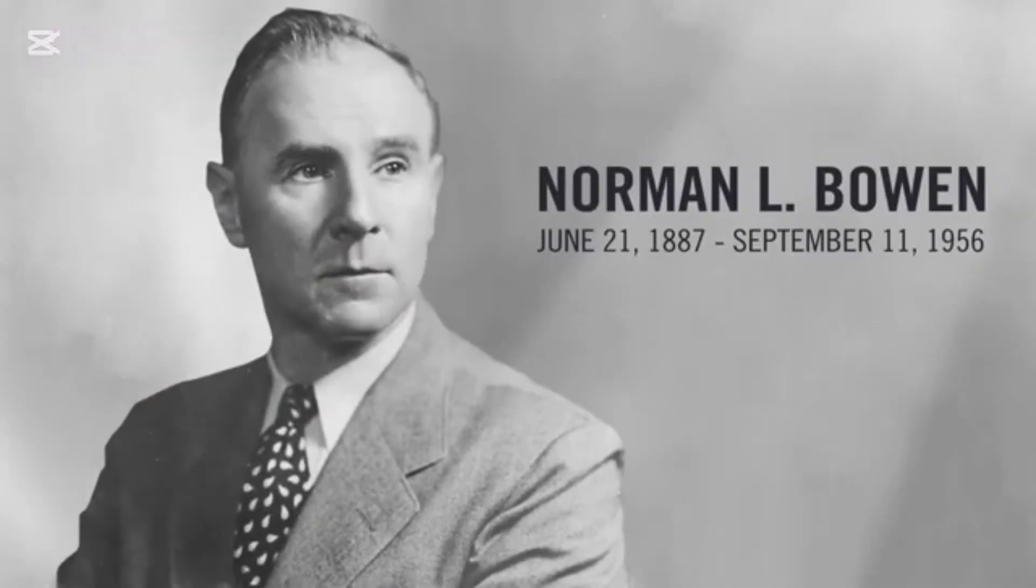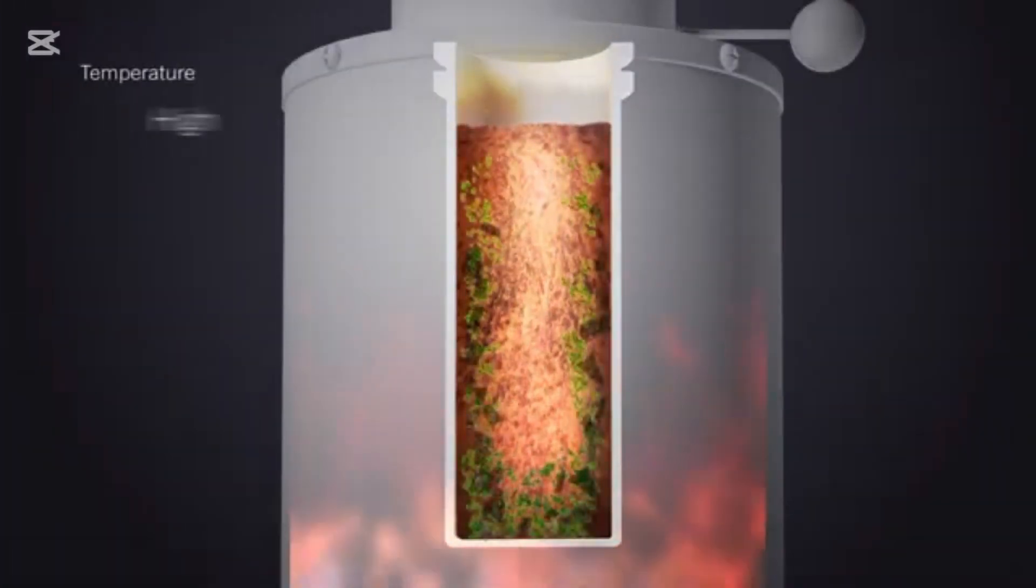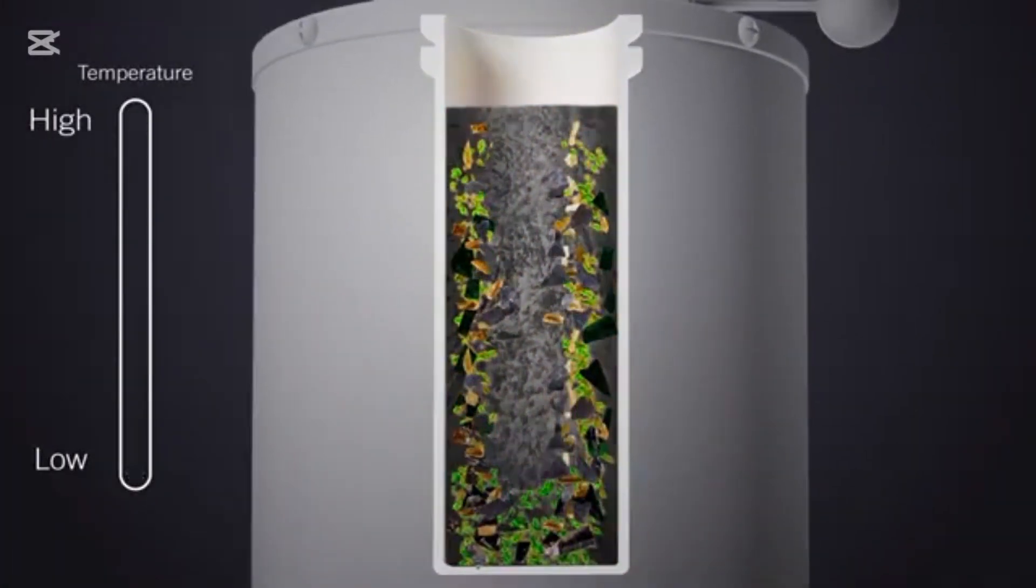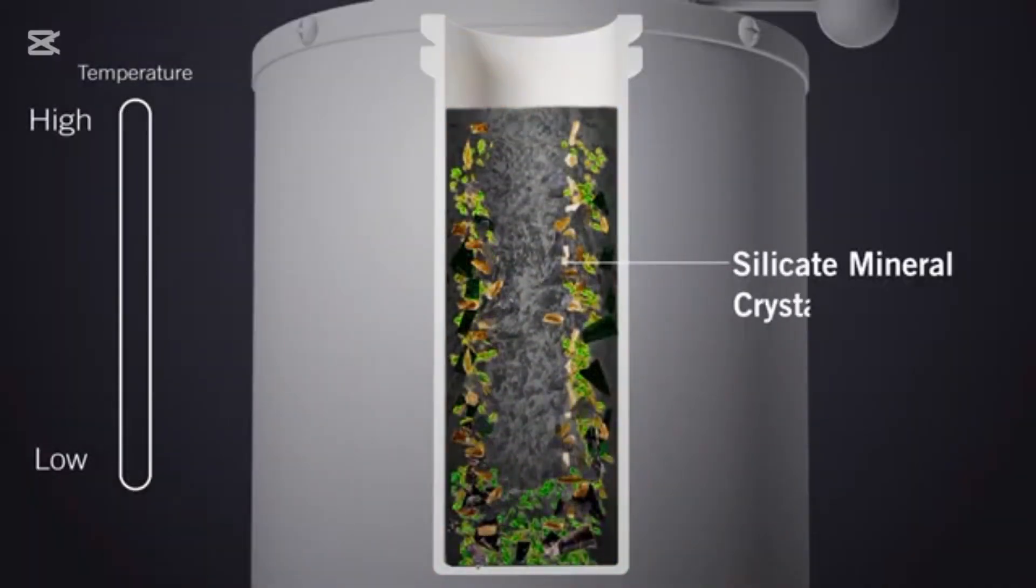In the early 1900s, a Canadian geologist named Norman L. Bowen designed a laboratory experiment where he cooled molten rock, magma, and monitored how the mineral composition of the solidifying igneous rock changed through a range of temperatures. What he observed was a repeatable, predictable sequence of silicate mineral crystallization that we now know as Bowen's reaction series.